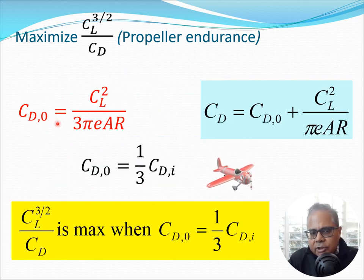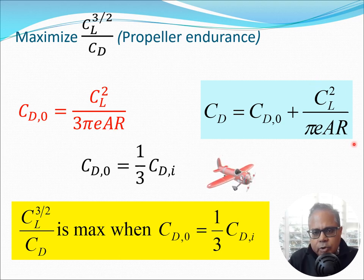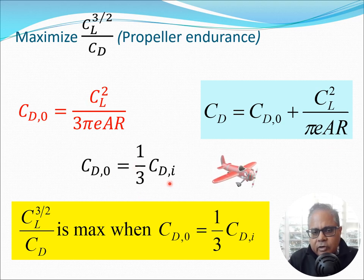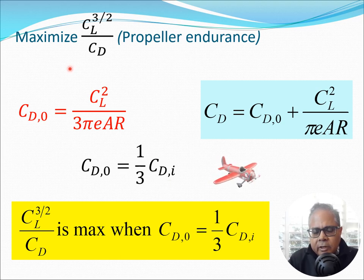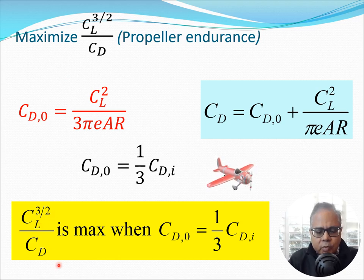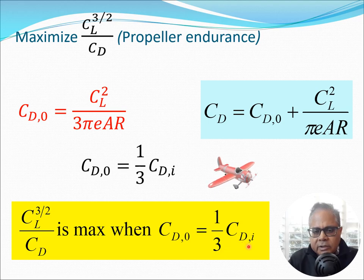The simplification reveals that CD0 equals (1/3) of CL²/(π·e·AR), which is exactly (1/3)·CDi. Therefore, the condition for maximizing propeller endurance is: CL^(3/2)/CD is maximum when CD0 = (1/3)·CDi.